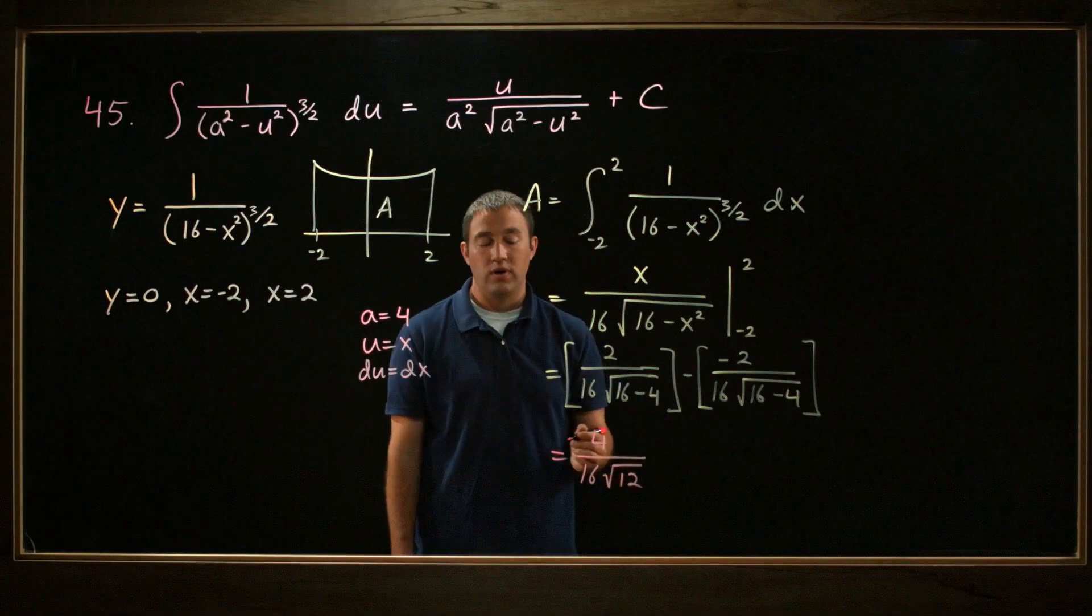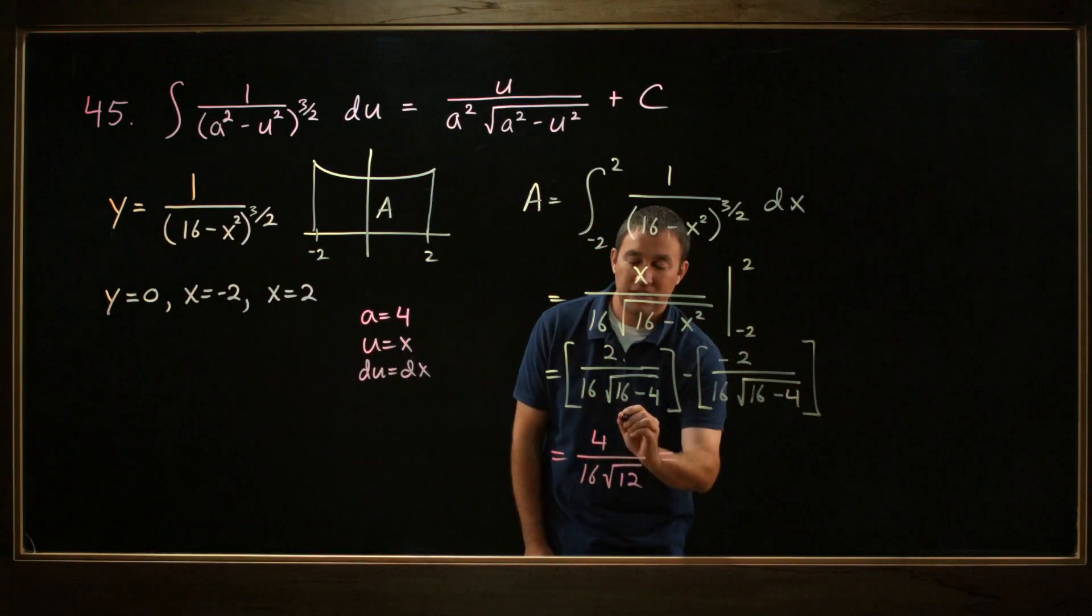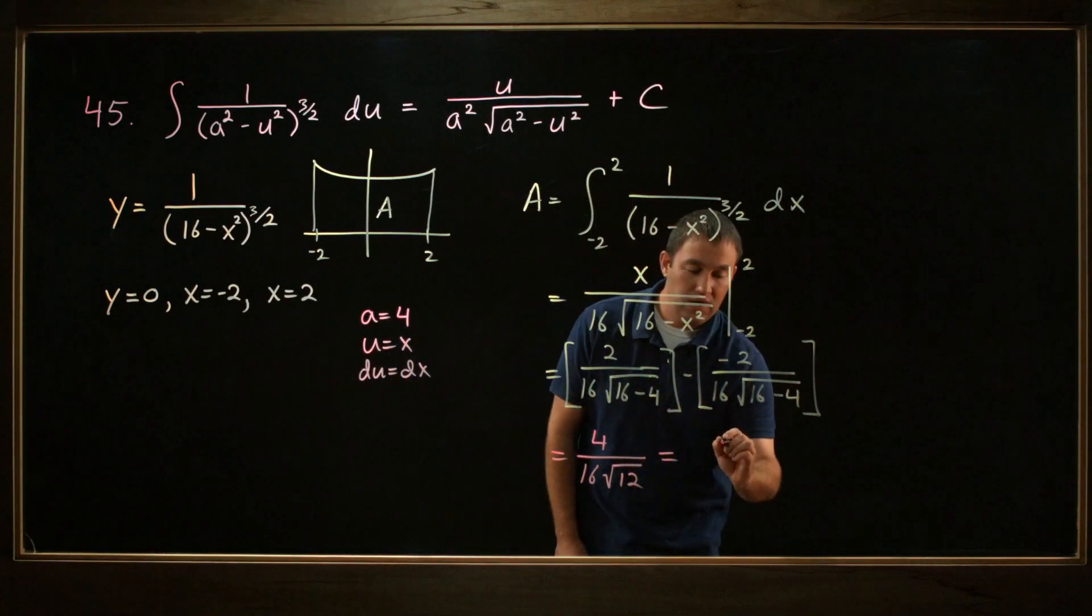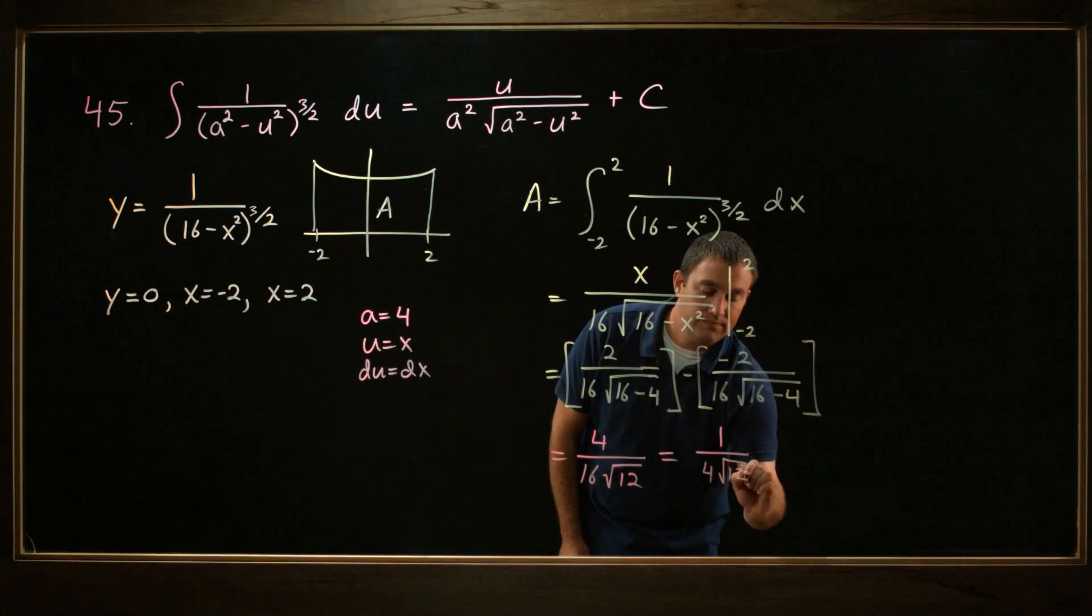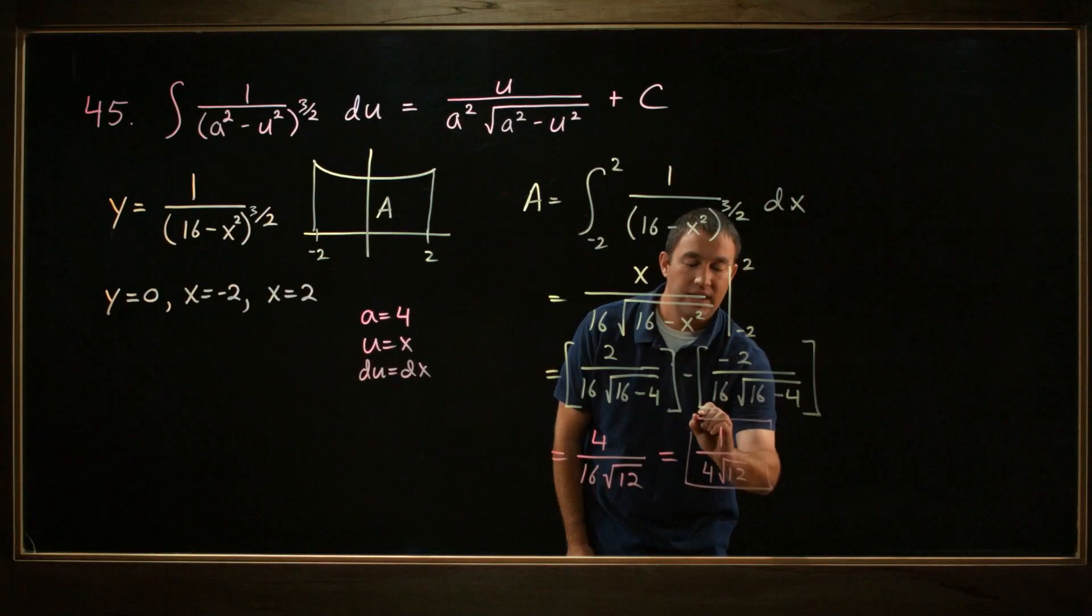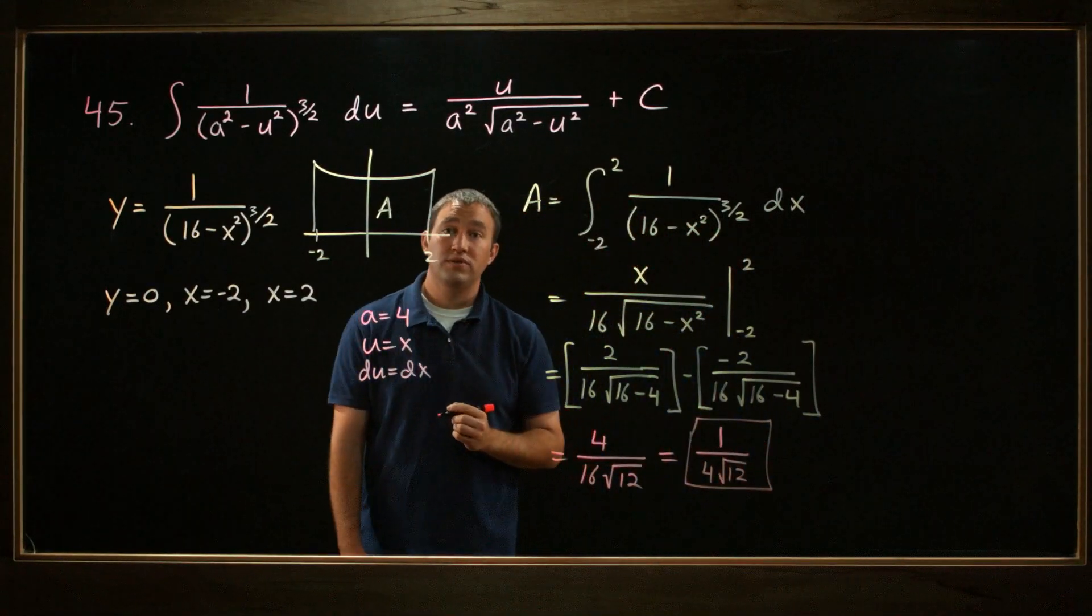And that's a fine answer. If you'd like to, you could simplify that a little further, canceling out the 4 and the 16, and you have 1 over 4 times the square root of 12. And that's a fine answer here. Thanks for watchin'.